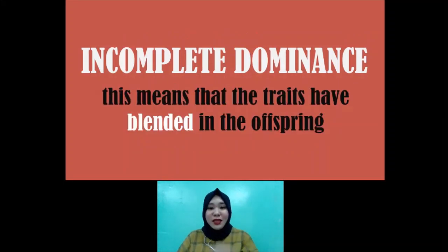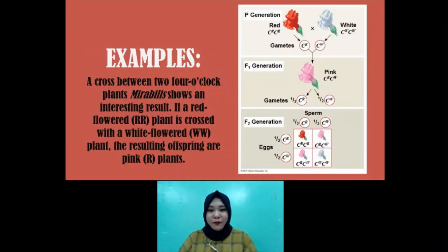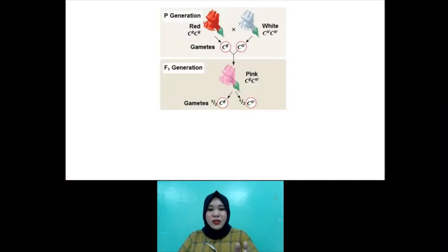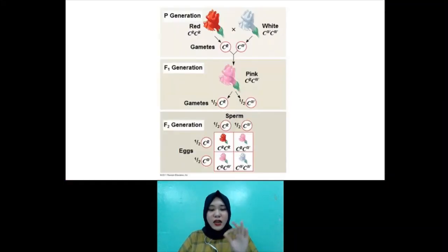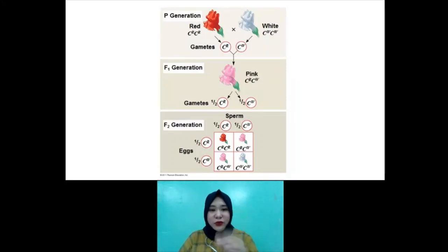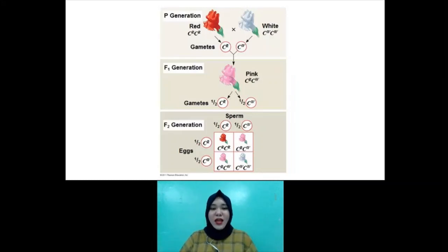When we talk about intermediate, it means the offspring produced is actually the blending between the two phenotypes. This means that the traits have blended in the offspring. For example, in four o'clock plants or mirabilis plants, as you can see in this set of diagrams here, the red flower is dominant over the white flower. But if the two flowers were to produce offspring, instead of producing a red or a white flower, they produce a pink flower — a combination between red and white color.